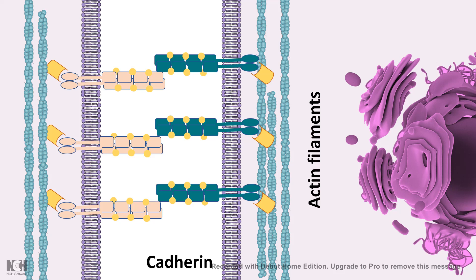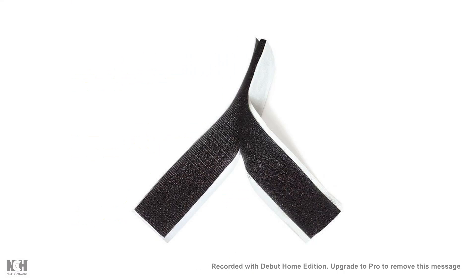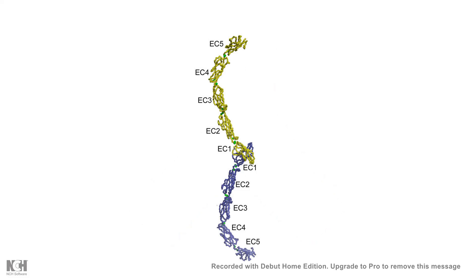Catenins basically connect two nearby cells like velcro — each individual velcro interaction is weak, but together they are very strong. This crystal structure shows the EC1 domain of cadherin from each side of the cells interacting with each other. Cadherin requires calcium for this interaction; when calcium is washed away or chelated, in vitro or even in vivo, the cadherins cannot interact with each other in a strong manner.